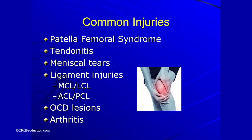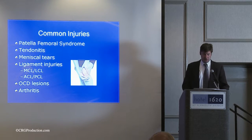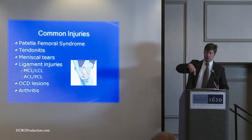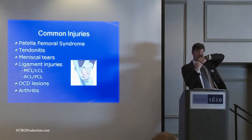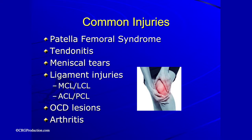Patellofemoral syndrome is a fancy name for kneecap pain, anterior knee pain, chondromalacia patella — it's got a bunch of different terms. Patella or quadriceps tendonitis is also very common. Less common are meniscal tears, which can be either stable or unstable, and ligament injuries — four main ligaments: the MCL, LCL, ACL, and PCL. The ACL and PCL are the two cruciate ligaments that cross in the middle of the knee. Also osteochondral defects, and I'll touch on arthritis, but that won't be the focus.